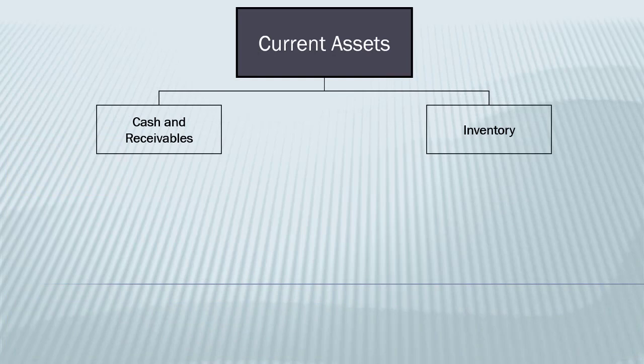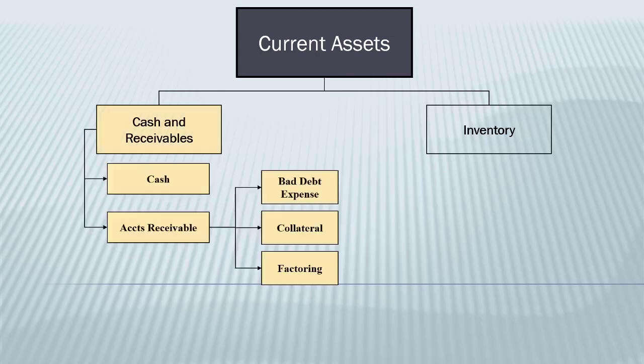We're going to focus primarily on cash and receivables, and then we'll talk about inventory as current assets. Under cash and receivables, we're going to discuss a little bit about cash, but mostly about receivables and how we use them to collect money from our customers, how we can use them to serve as collateral for a loan, and how we can sell them to another company and let them do the collections so that we get our money up front. Lots of cool stuff in this section. Let's get started.